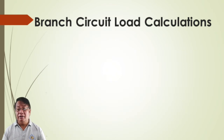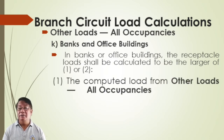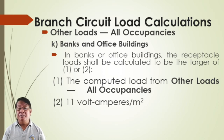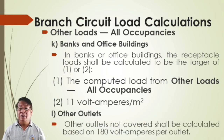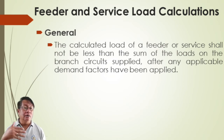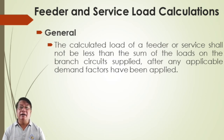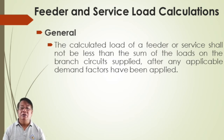For banks and office buildings, the computed load is 11 volt-amperes per square meter or 180 volt-amperes per outlet. For feeder and service load calculations — the main feeder and sub-feeder — the calculated load of the feeder or service shall not be less than the sum of the loads of the branch circuits supplied after any applicable demand factors have been applied.